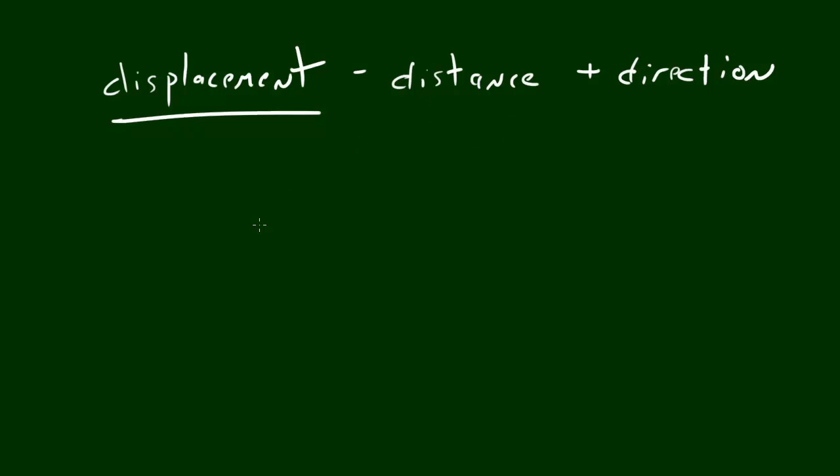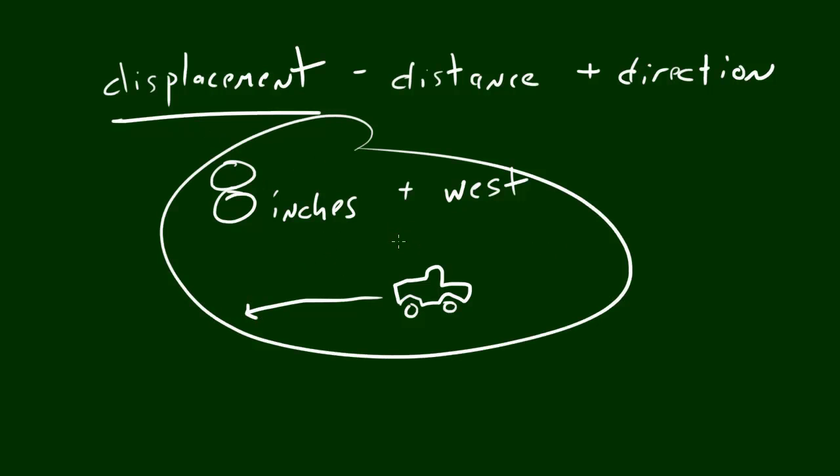Well, say we have a distance, say we're pushing some toy cars around on the floor, and we move the toy car a distance of 8 inches. Well, that would be the distance, 8 inches. But now, in order to get the displacement, we need to know what direction we moved it in. And say we moved it not only 8 inches, but we also moved it west. So this was the original starting point for the toy car, and we moved it 8 inches to the west. So there you go, this would be displacement.